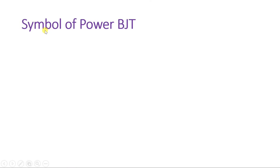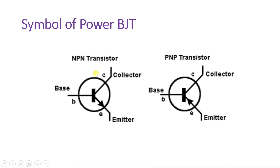The symbol of Power BJT is almost identical to that of normal BJT. The arrow indicates the emitter: in an NPN transistor, the arrow points outward; in a PNP transistor, the arrow points inward. The collector and base are labeled accordingly. So if the arrow is outward it is NPN, and if inward it is PNP.